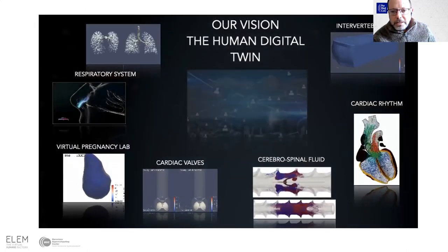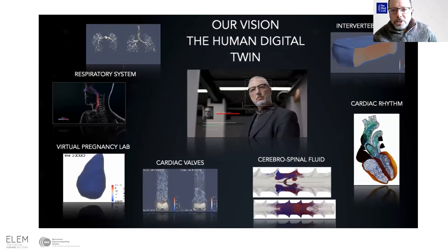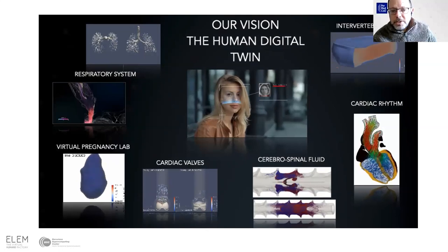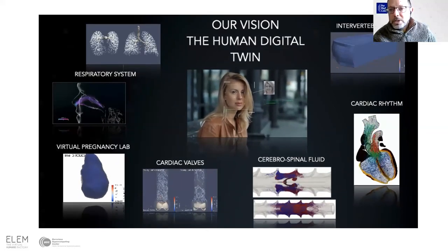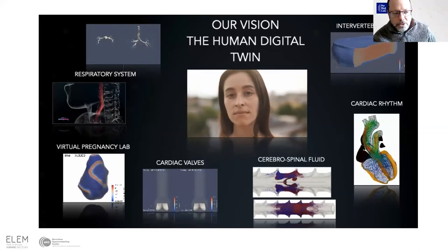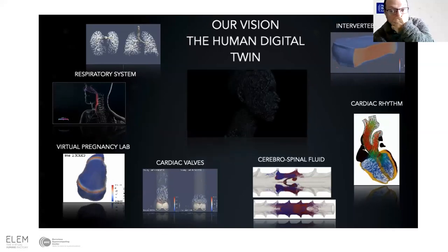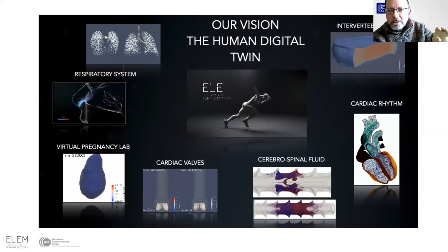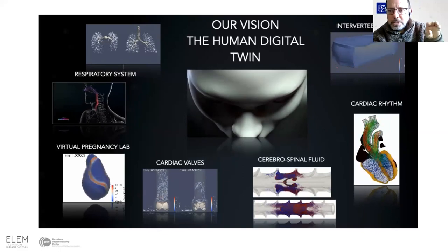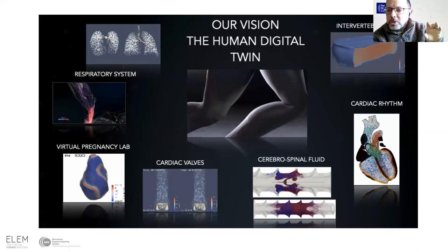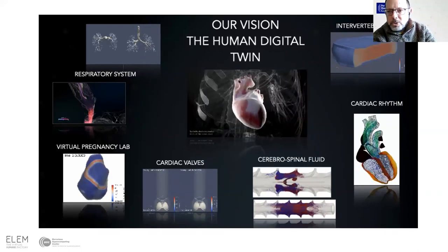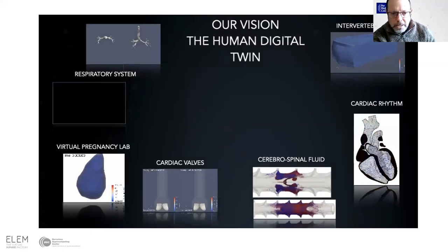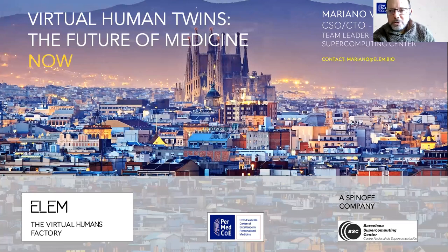Just to finish with a pictorial conclusion — this is our vision of the human digital twin. All the things you see here are things that we are working on in our team in LM and in BSC. For instance, I didn't speak about the cerebrospinal fluid, but it is something that we are doing, and the intervertebral disc also. I couldn't speak about them because I didn't have enough time, but it is also something that we do. The final goal is, going step by step, integrating the different parts of the body in order to have a full human digital twin. Of course, this is a long way and it will take a long time, but it is the direction we are going, just by adding up the different contributions. Thanks a lot for your attention.